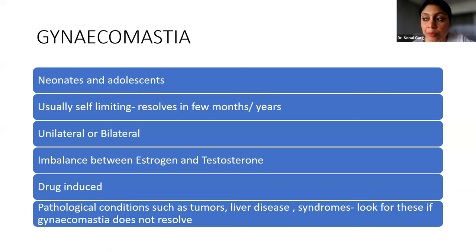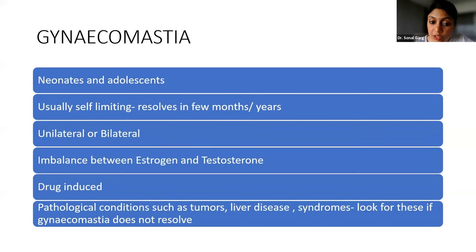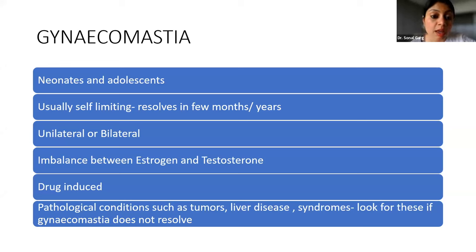You will see a lot of normal boys with budding breast tissue. In these children it is usually self-limiting and resolves in a few months to two years. It may be unilateral or bilateral — even normal puberty-related gynecomastia might be only unilateral, so that is not alarming. It occurs due to an imbalance between estrogen and testosterone, which occurs in neonates because of maternal estrogen and in adolescence when the central pituitary axis is taking over.